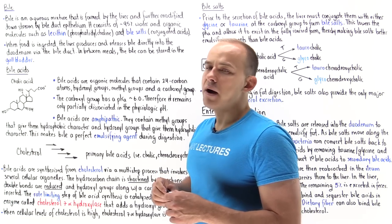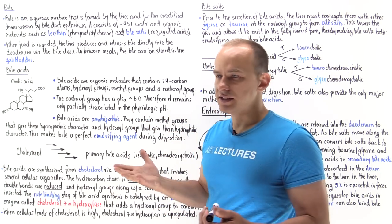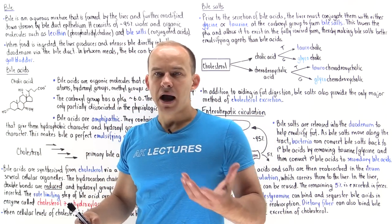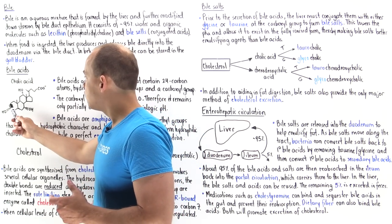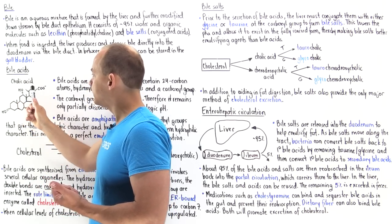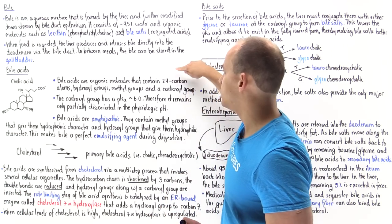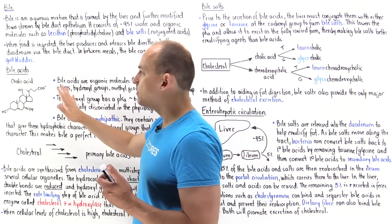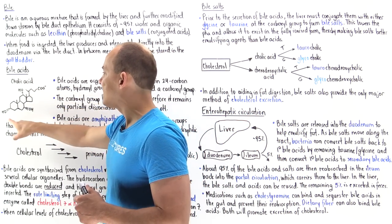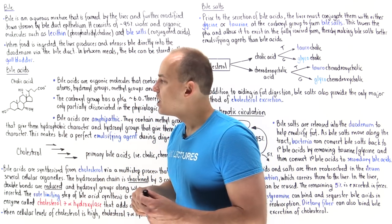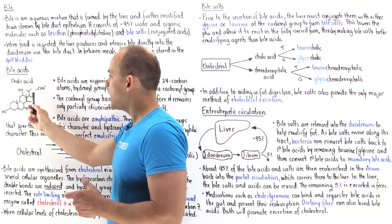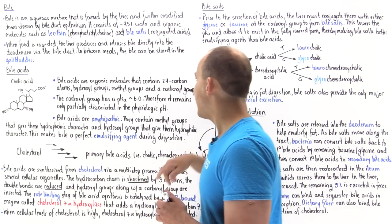Bile acids are organic molecules containing 24 carbon atoms. Here we have one example, cholic acid, which has four carbon rings plus a hydrocarbon chain — totaling 24 carbons. Depending on the bile acid, there can be two or three hydroxyl groups. Cholic acid has three hydroxyl groups and two methyl groups. At the end of the hydrocarbon chain, there is a carboxyl group.